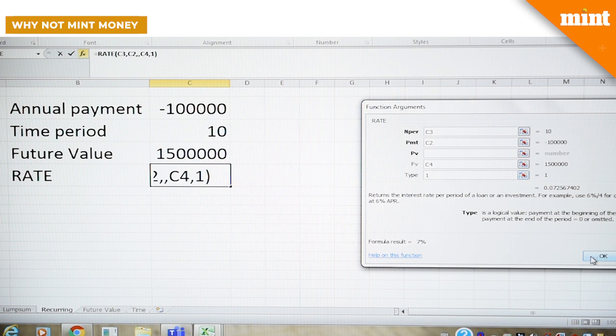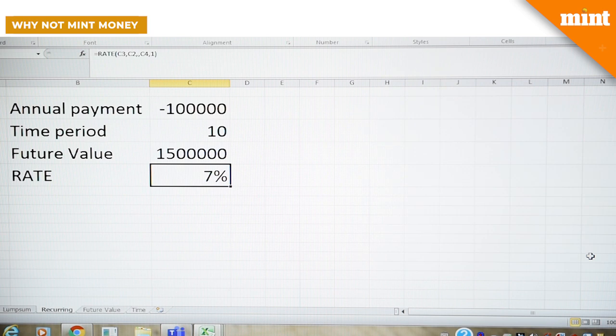And here you go. The return is seven percent. So today you have learned how to calculate the rate of return on your investments.